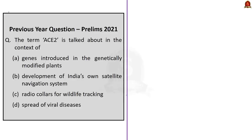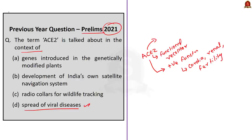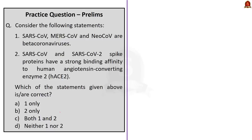Now let us take up the practice prelims questions. The first is a previous year question from the 2021 prelims paper: 'The term ACE2 is talked about in the context of —'. From our discussion, ACE2 is related to the spread of viral diseases because it acts as a functional receptor for certain coronaviruses such as SARS-CoV and SARS-CoV-2. But also remember, ACE2 has positive functions — it plays a role in regulation of cardiovascular function, renal function, fertility, protection of lungs from severe acute lung injury, and regulation of hypertension and electrolyte balance. The correct answer is option D: spread of viral diseases.